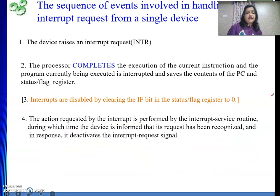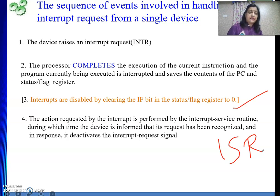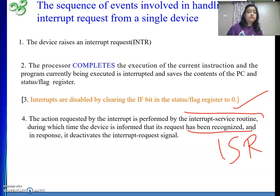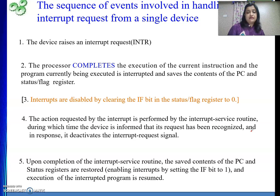After disabling further interrupts, we start the ISR — the interrupt service routine. The ISR is a set of instructions that performs the action requested by the interrupting device. During this time the device is informed that its request has been recognized; it sees that the processor is accessing its interface registers, knows its work is being done, and deactivates the interrupt request signal.